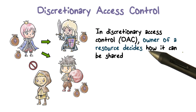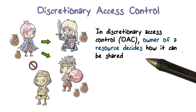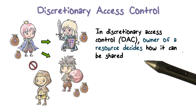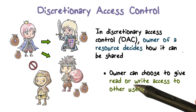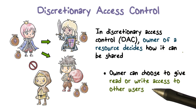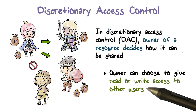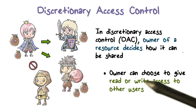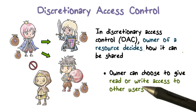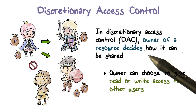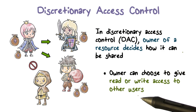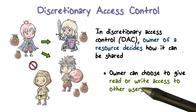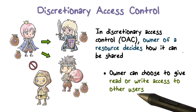In discretionary access control, whoever creates the resource is the owner of that resource, and the owner can selectively grant access to other users. For example, Bob may be able to both read and write, and Charlie can either read or write, or maybe just has read access. So the idea is that resources have owners who are users, and these owners get to decide — at their discretion — who else should be able to share these resources.